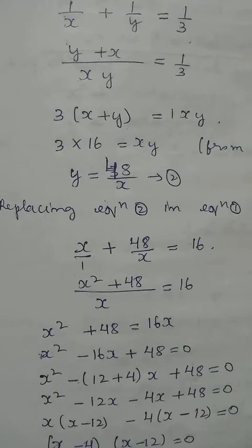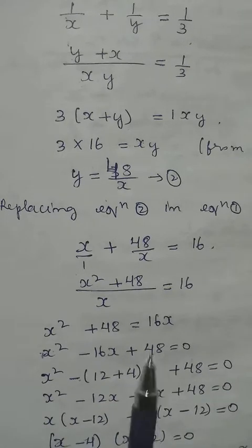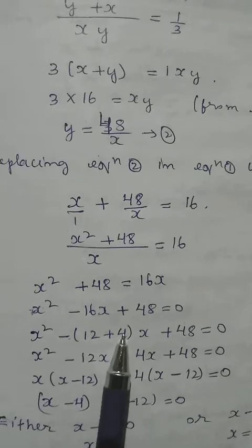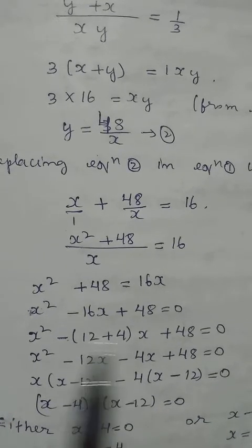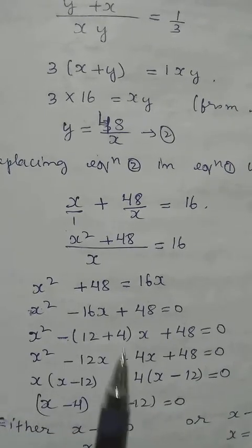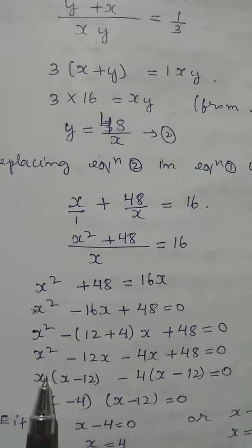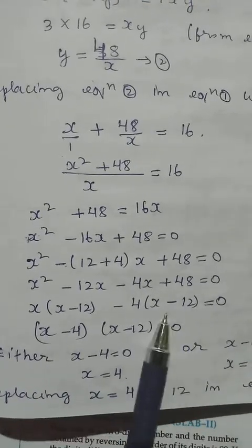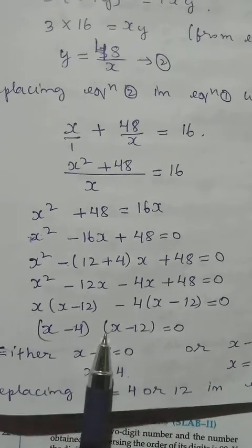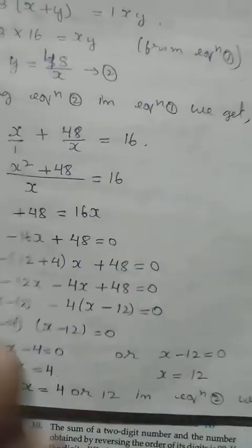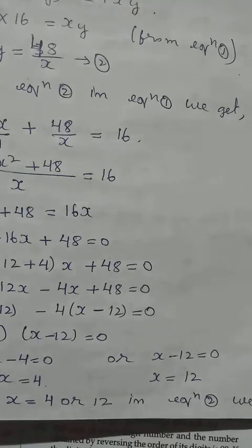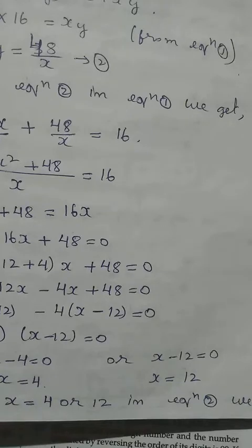Splitting the middle term: 1 times 48 equals 48. We need two numbers that multiply to 48 and add to 16 — those are 12 and 4. So we write x squared minus 12x minus 4x plus 48. Factoring: x(x minus 12) minus 4(x minus 12) equals 0, giving (x minus 12)(x minus 4) equals 0. So x equals 12 or x equals 4. If the first number is 12, the second is 4; or if the first is 4, the second is 12.